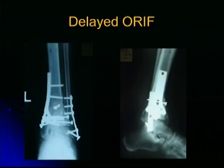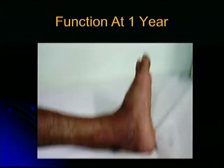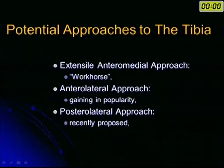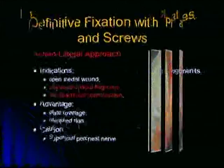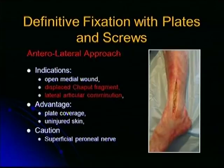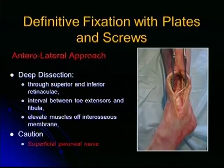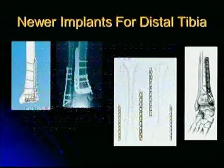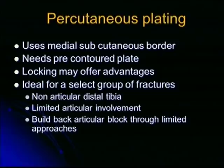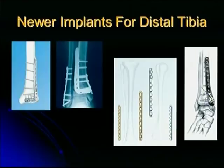This is the result and the function of the foot at one year. The approaches used are the extensile anteromedial, the anterolateral, and the posterolateral approach. The anteromedial approach gives wide exposure of the anteromedial surface. The anterolateral approach is used for displaced Chaput fragments, when there is a wound on the medial side, or a lateral articular comminution — you must be careful of the superficial peroneal nerve. These are the newer implants available for the distal tibia: the lateral plate, the medial plate, and the metaphyseal plate, used in minimally invasive plate osteosynthesis.